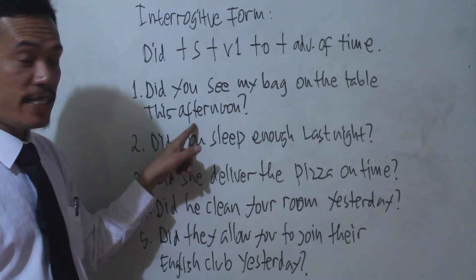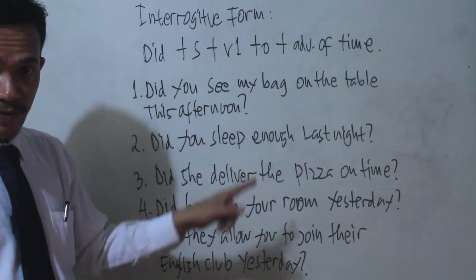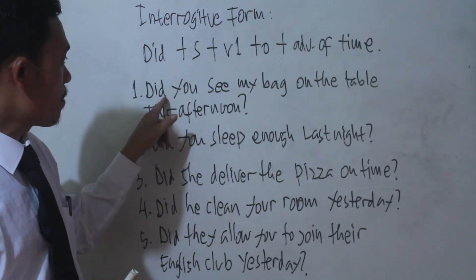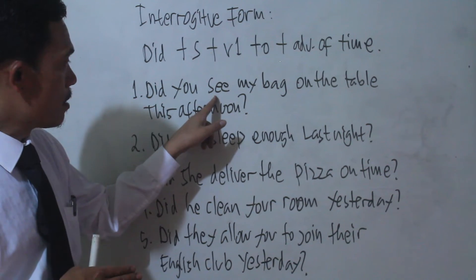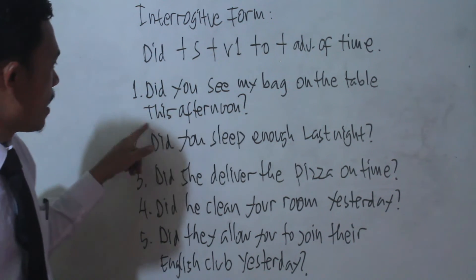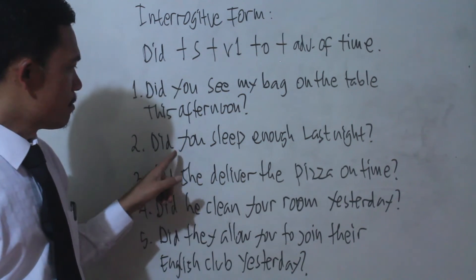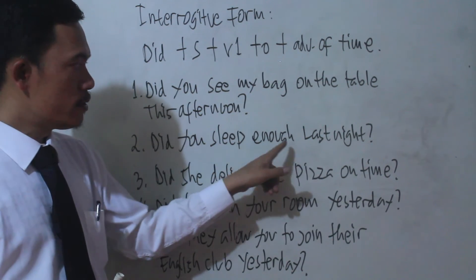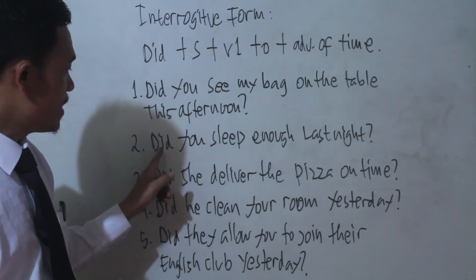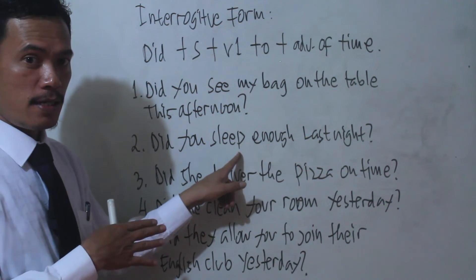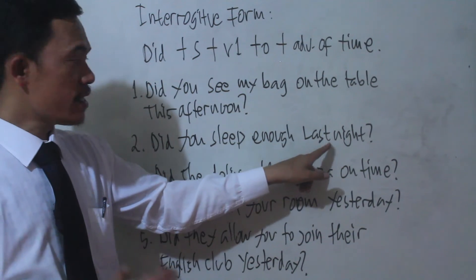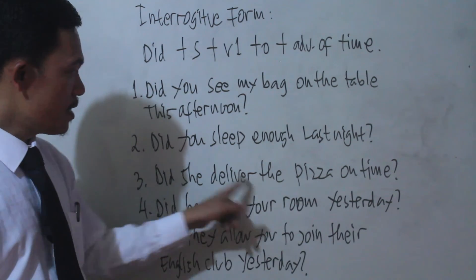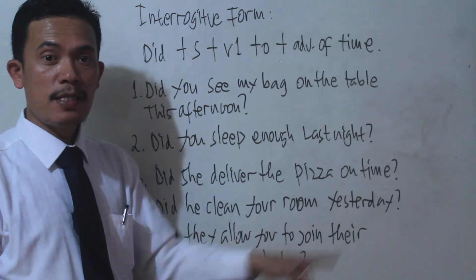Examples: 'Did you see my bag on the table this afternoon?' — Apakah kamu melihat tas saya di atas meja tadi sore? 'Did' is simple past tense, so the verb must return to infinitive — 'see', not 'saw'. Next: 'Did you sleep enough last night?' — Apakah kamu tidur cukup semalam? 'Sleep' is verb 1. Next: 'Did she deliver the pizza on time?' — Apakah dia mengantar pizza itu dengan tepat waktu?